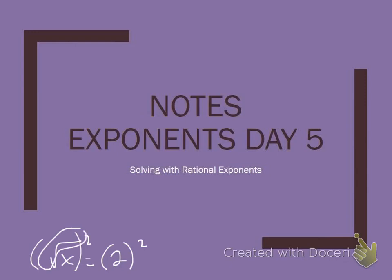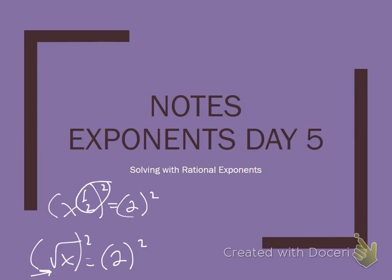We know that squares and square roots are going to eliminate each other, but why? Think about rewriting this radical in exponent form — we would rewrite it as x to the one-half power. Then if we square that, the reason why squares and square roots eliminate each other is because now we've got to multiply those two exponents. Two times a half is one, so we get x to the first power equals two squared. X to the first power is just x, so the square root is gone. It's all about multiplying those exponents to get one.